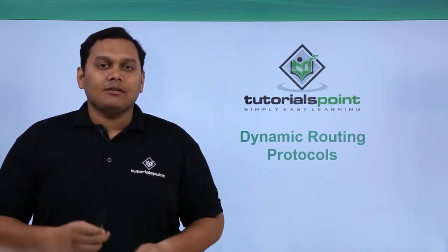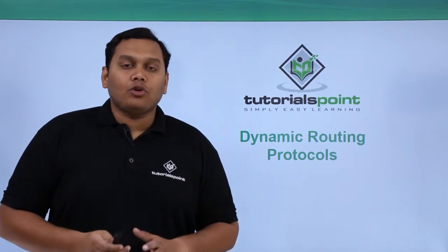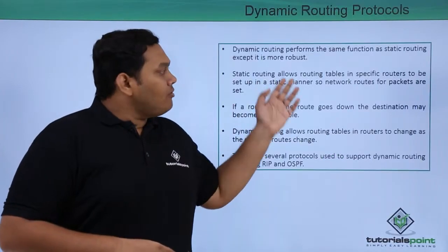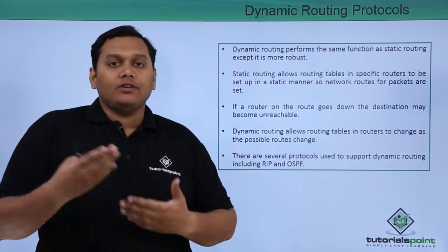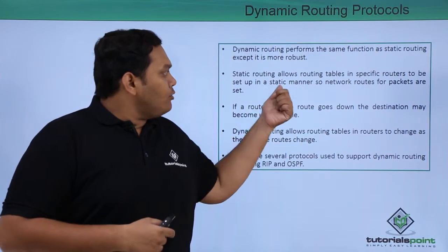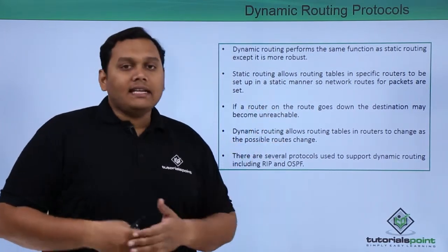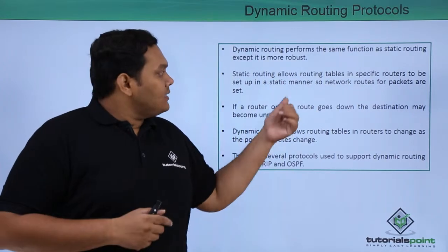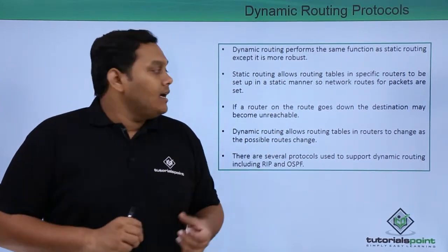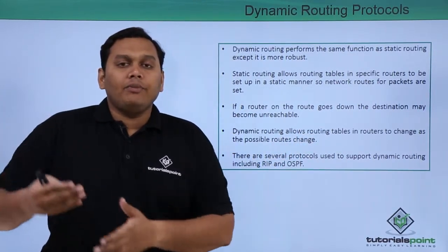In this video, we are going to discuss dynamic routing protocol — what it is and how it functions. Dynamic routing protocol performs the same function as static routing protocol, which allows the routing table in specific routers to be set up in a static manner so that network routes for packets are also set up in the same manner. If a router on the route goes down, then the destination will be unreachable.